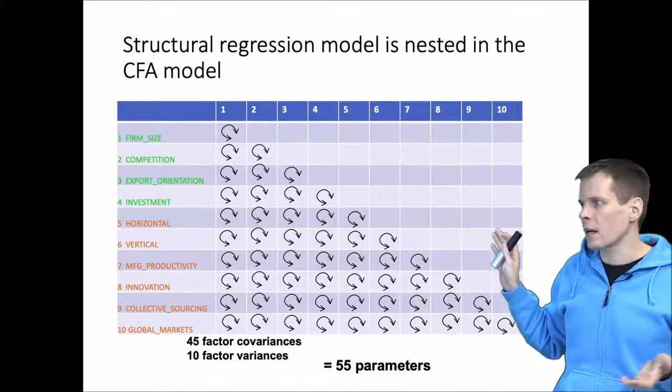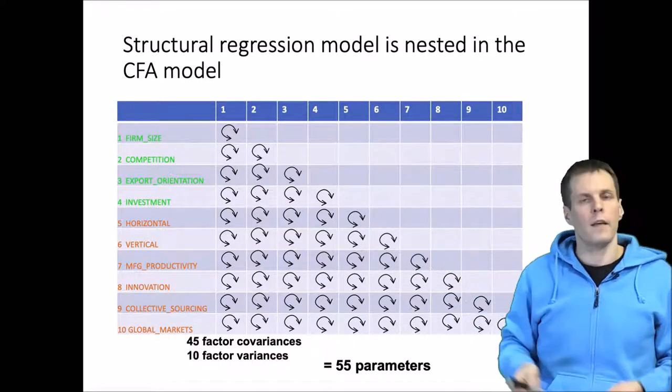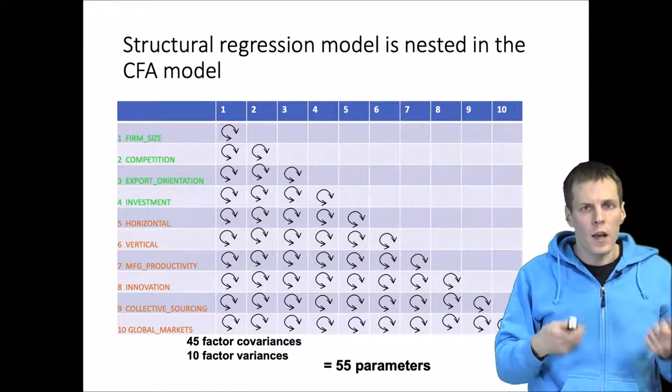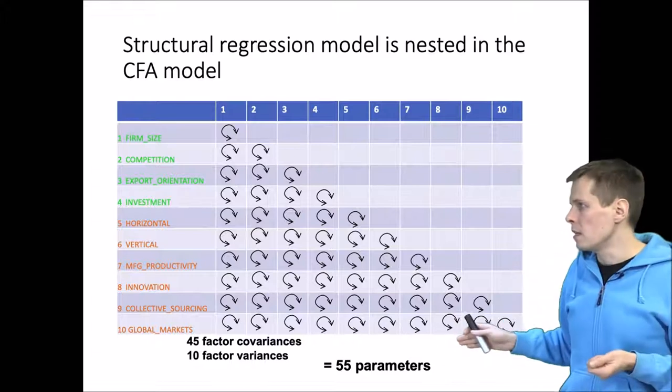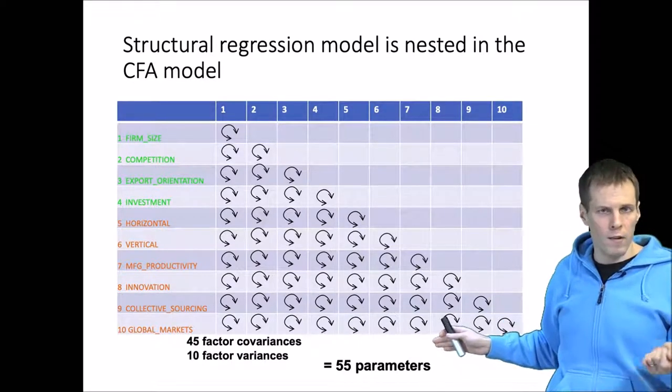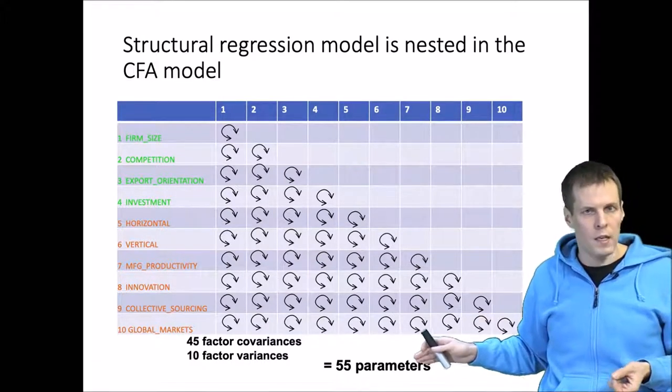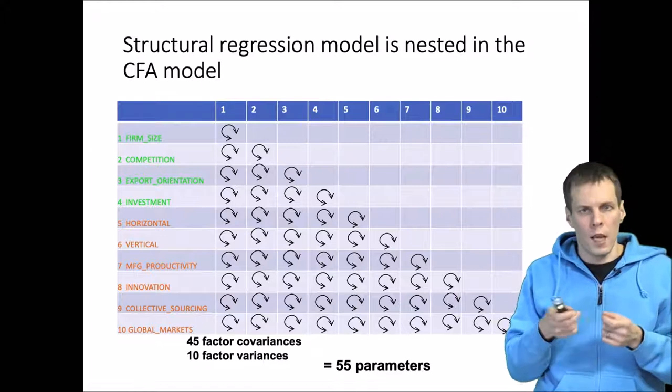We have 10 factors that are all allowed to be freely correlated, and then we start to add constraints to the model and we will see that the degrees of freedom goes up. We have now 55 covariances and variances of the factors.